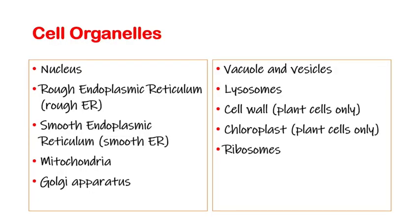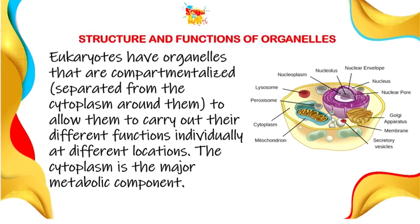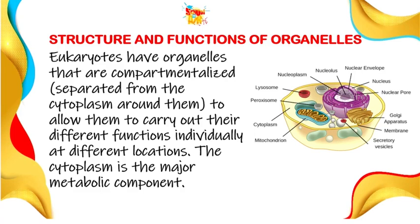Now let's look at some cell organelles. We have the nucleus where the DNA is located, the rough endoplasmic reticulum (rough ER), the smooth endoplasmic reticulum (smooth ER), mitochondria, Golgi apparatus, vacuole, vesicles, lysosomes, cell wall which is present in plant cells only, chloroplasts which are also only in plant cells and used for photosynthesis, and ribosomes. Eukaryotic organelles are compartmentalized, separated from the cytoplasm around them to allow them to carry out their different functions individually at different locations.